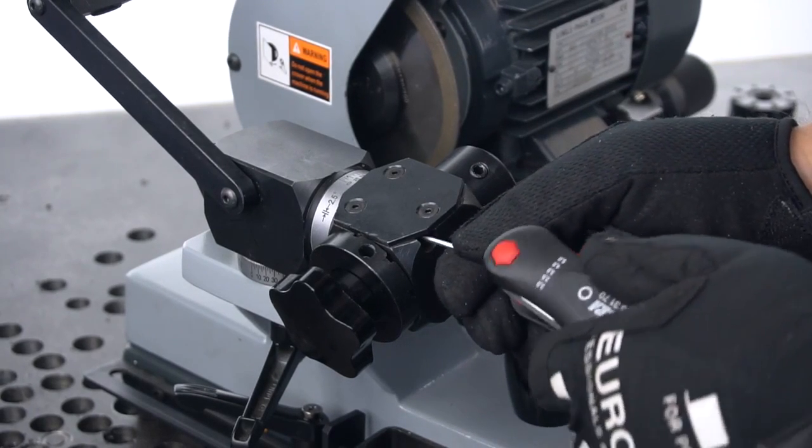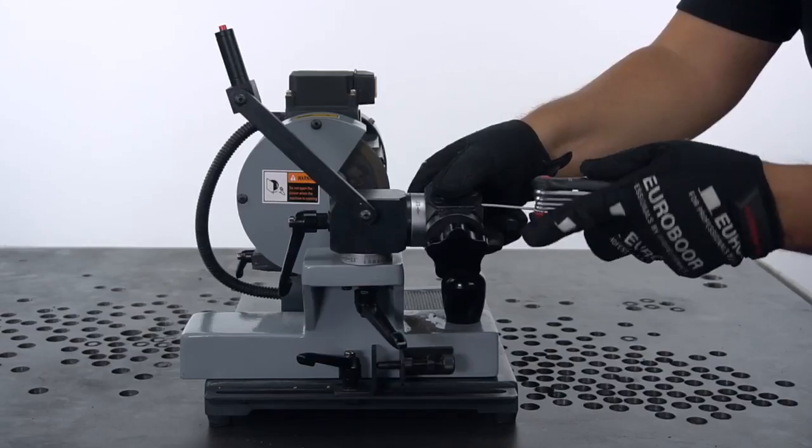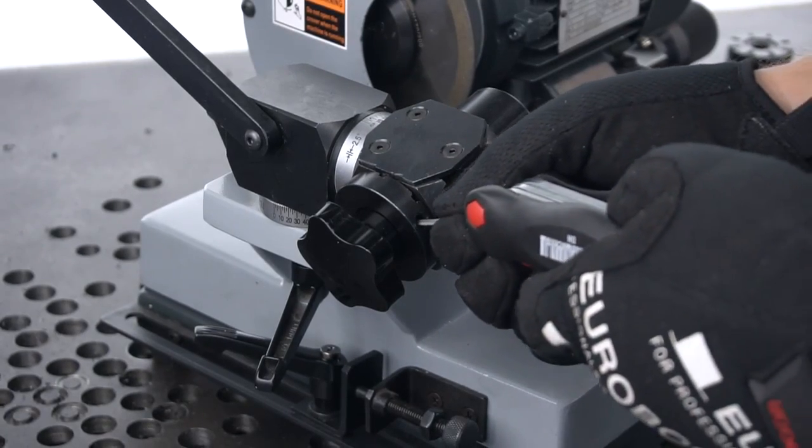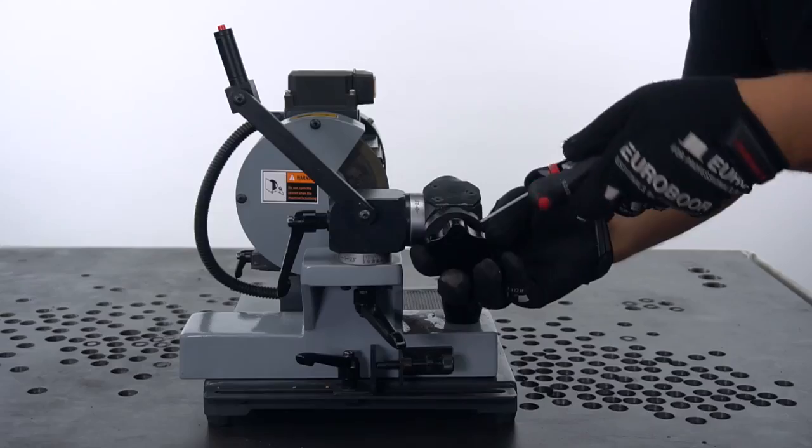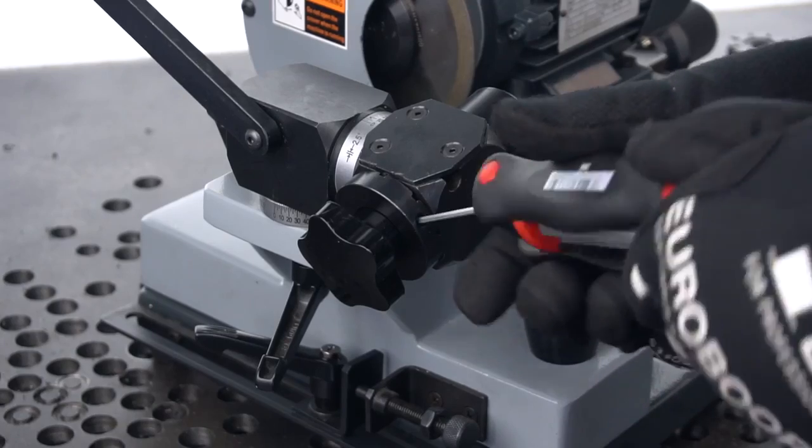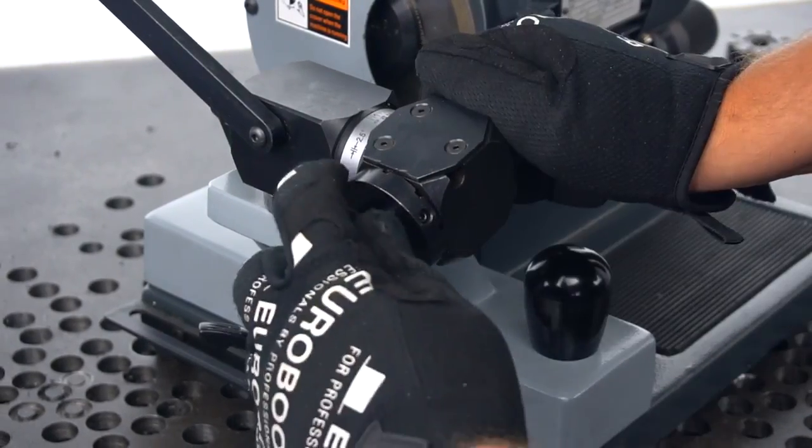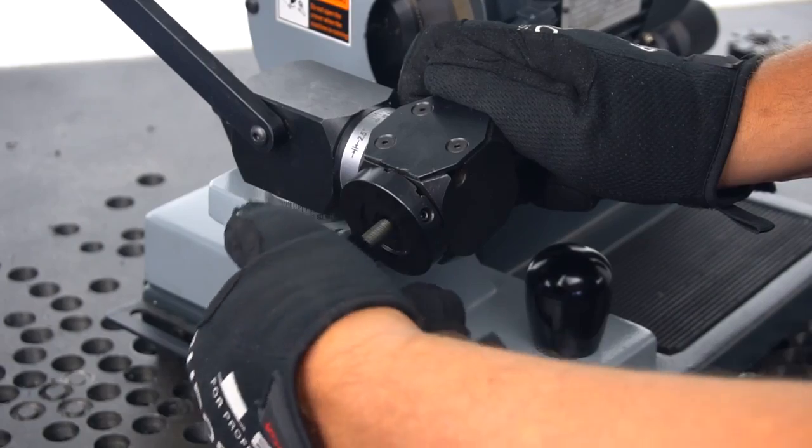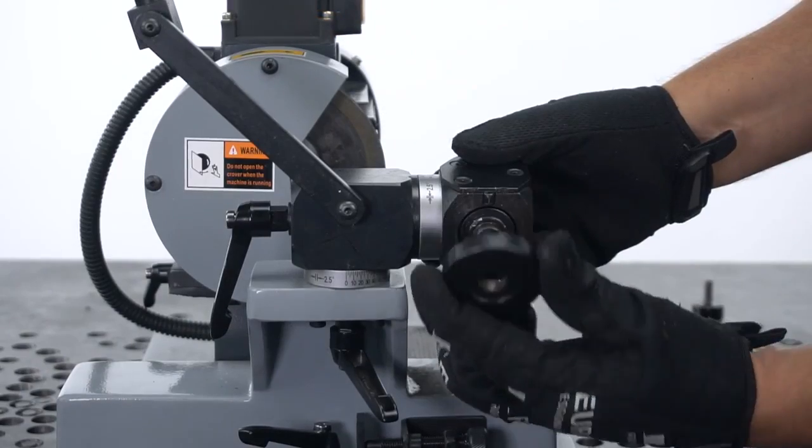Start by unlocking the bolt of the cutter holder. Untighten the screw on the index plate. Unscrew the star wheel. Then take out the index plate.